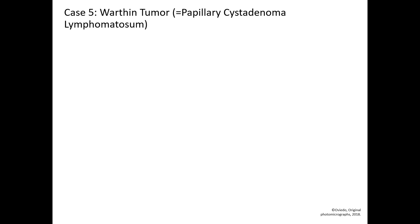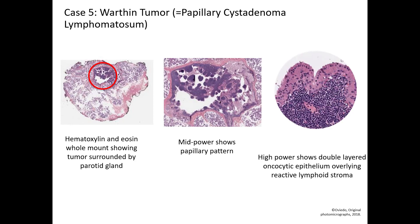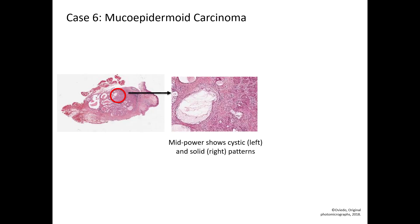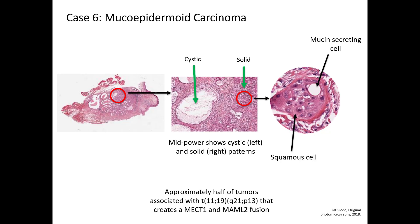Case 5 is Warthin tumor, the same as papillary cystadenoma lymphomatosum. The mid-power shows the papillary pattern. On the right, you can see the oncocytic epithelium and the reactive lymphoid stroma. Case 6 is mucoepidermoid carcinoma — the mid-power demonstrates cystic and solid patterns. On higher power, here is a mucin-secreting cell and here is a squamous cell. Approximately half of mucoepidermoid carcinomas have an 11-19 translocation creating a MECT1-MAML2 fusion.